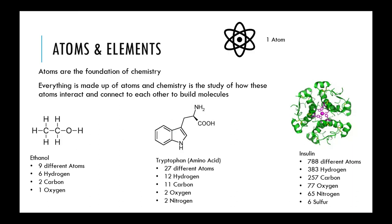Elements themselves are specific where atoms are more general. An element is a unique atom. Atoms are basically the foundation of chemistry — absolutely everything is made up of different atoms. While one atom can exist by itself, all different types of molecules as well as other physical things are made up of all of these atoms.